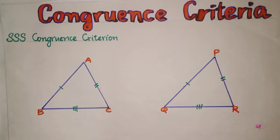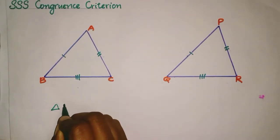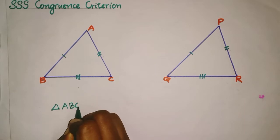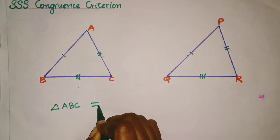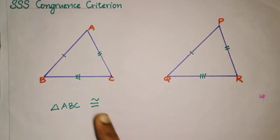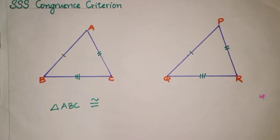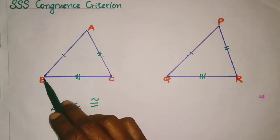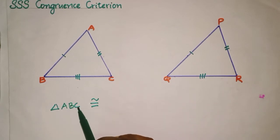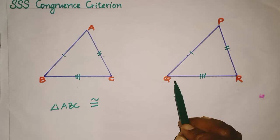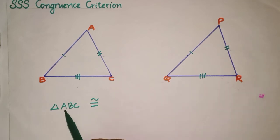How can we represent the congruency? Let us take triangle ABC. It is congruent to — we know that these two triangles are congruent but we must write it properly. Here AB is equal to PQ. Then BC is equal to QR.